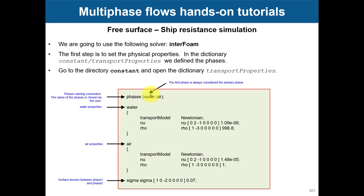OpenFOAM does not have a built-in database, so these names are user-given. You could call them anything, like banana and pineapple. Under each phase sub-dictionary you give the properties: the model, kinematic viscosity, and density. You also need to define the surface tension sigma.